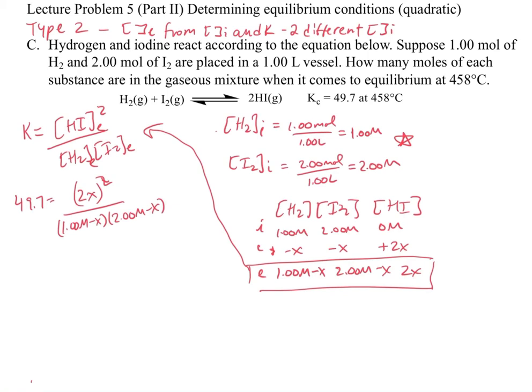And then we look to see can we simplify this by taking a square root. And what you'll notice is that you cannot, right? So before in the previous one, because we had the same concentrations, that allowed us to simplify by making this bottom part just simply a squared and we could take the square root. Now we can no longer do that. So what's going to wind up happening is we're going to have to actually solve this thing as a full-blown quadratic.